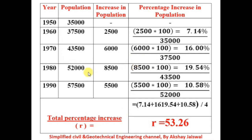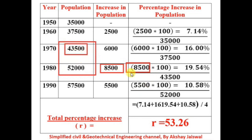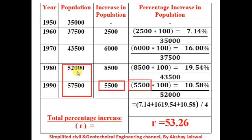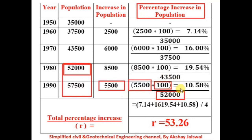Similarly, for case three, the increase of 8,500 is divided by 43,500 and multiplied by 100, giving 19.54%. For case four, the increase of 5,500 is divided by 52,000 and multiplied by 100, giving a percentage increase in population of 10.58%.